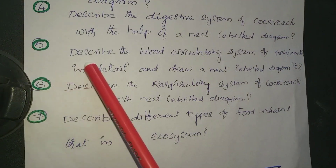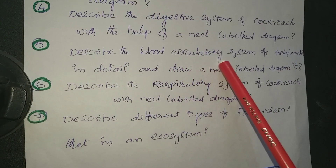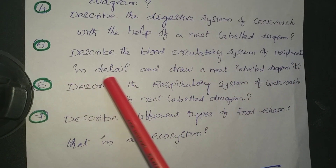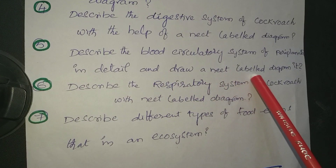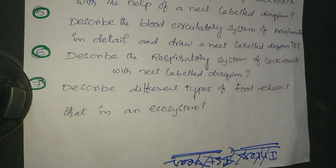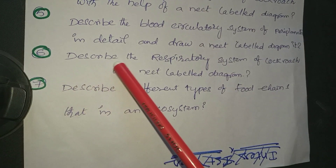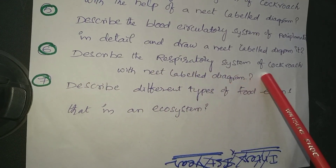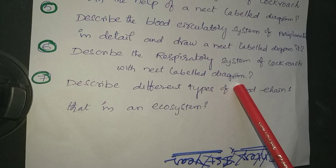5th question: Describe the blood circulatory system of Periplaneta in detail and draw a neat labelled diagram. 6th question: Describe the respiratory system of Cockroach with a neat labelled diagram.